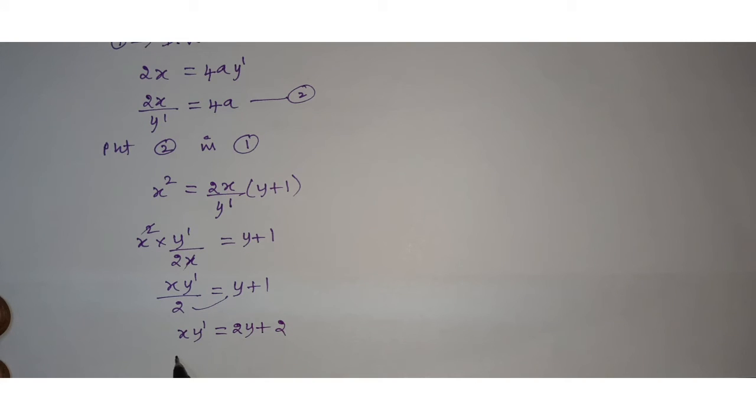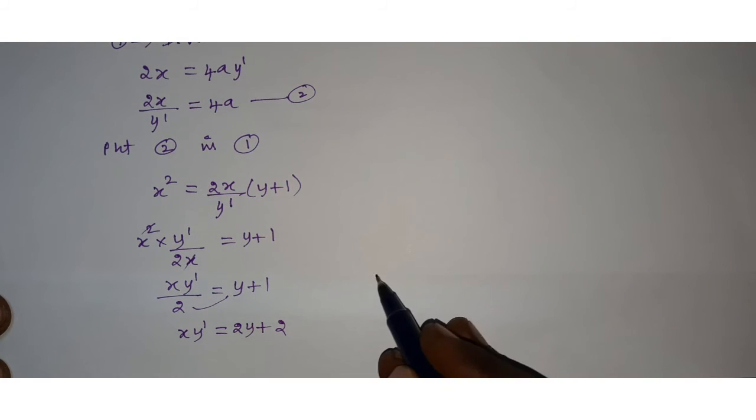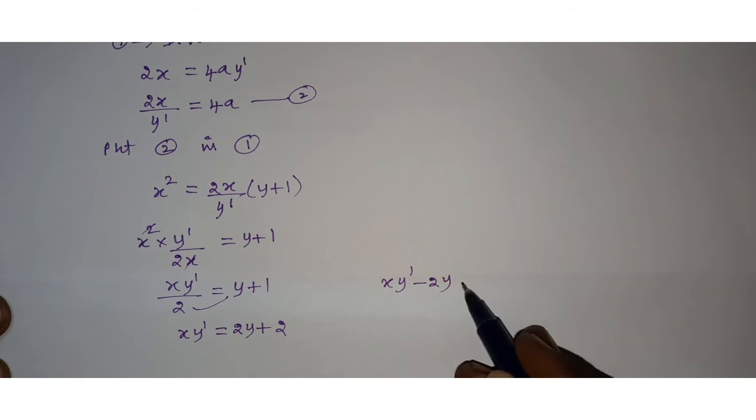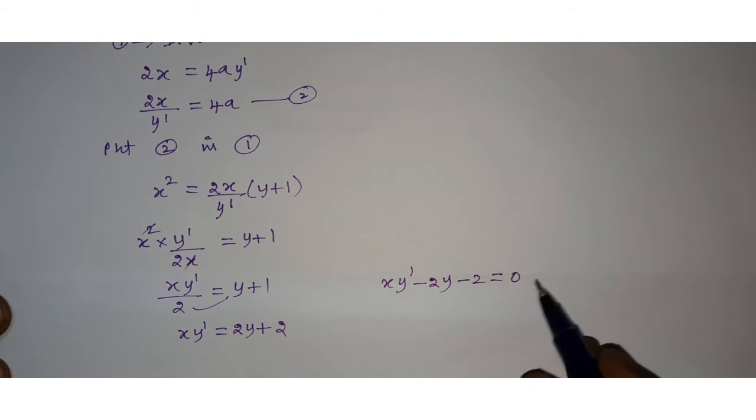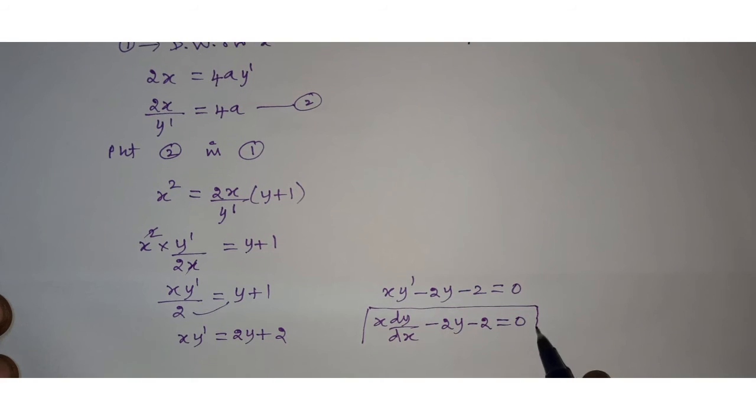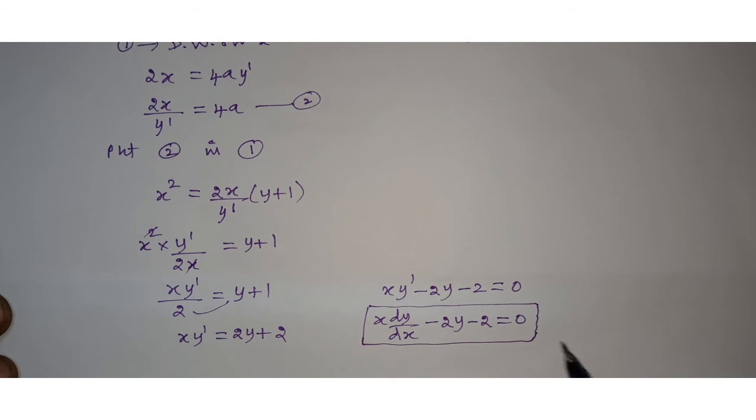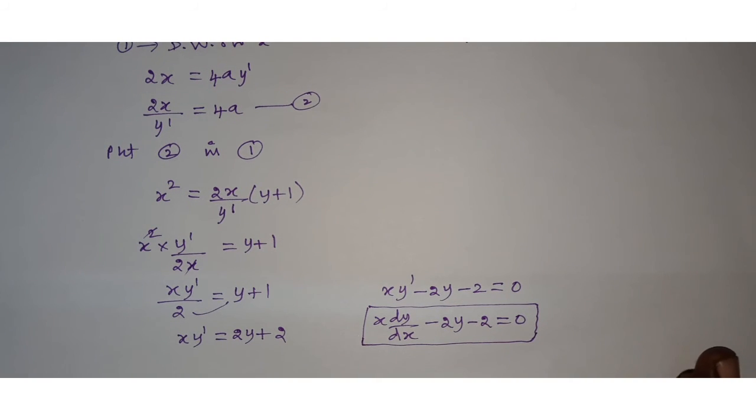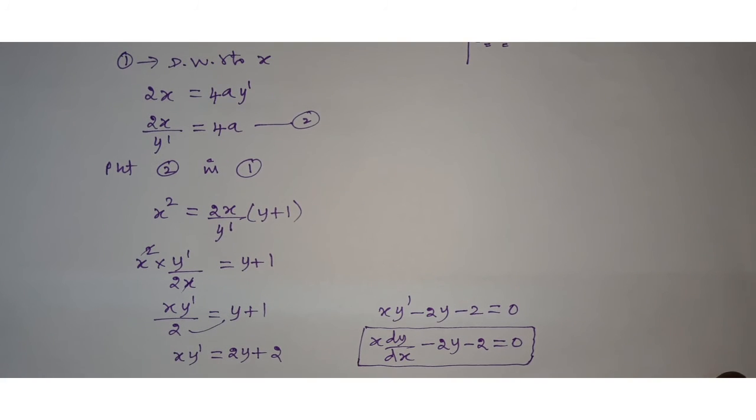All that one side is going to be x·y' - 2y - 2 = 0. That is x·dy/dx - 2y - 2 = 0. So, order of differential equation, a is the arbitrary constant, a is removed from this differential equation.